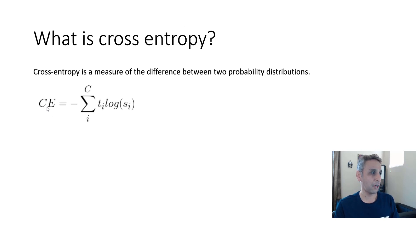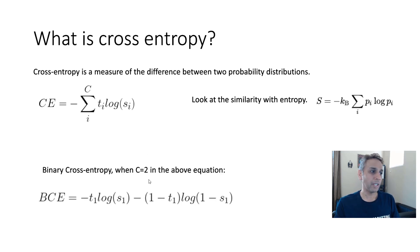If you look at the equation for cross entropy, it is negative of the summation Ti log Si. Si is the probability. In fact, if you look at the similarity with the entropy, you see the equations are very similar. That's because this is based on the concept of entropy.